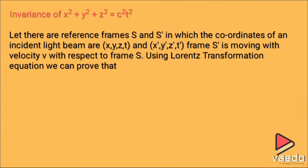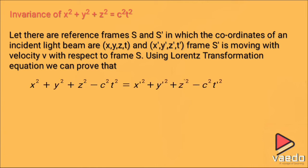Using the Lorentz transformation equations, we have to prove that x² + y² + z² − c²t² is exactly equal to x'² + y'² + z'² − c²t'².